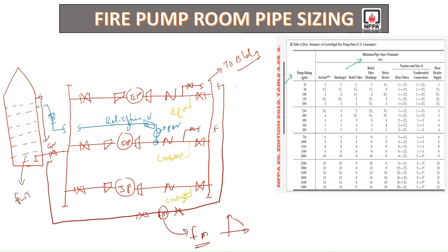Now we will discuss the pipe sizing. For example, if our fire pump capacity is 1500 GPM, when you refer to Table 4.28 you can find that the minimum suction size will be 8 inch. Apart from that, the discharge line will also be 8 inch. These are the minimum sizes that shall be considered.